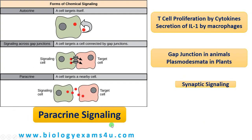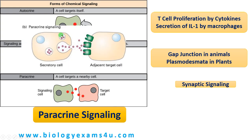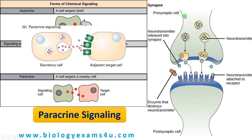The third type of signaling is called paracrine signaling. Para means nearby. Here a cell targets a nearby cell — a secretory cell releases ligands that have receptors on the nearby target cell, causing a response in that nearby target cell. The classical example is synaptic signaling. During nerve impulse transmission, neurotransmitters are released from the presynaptic cell as a result of an electrical impulse. This neurotransmitter has a receptor on the postsynaptic cell, and binding causes a cellular response such as opening of ion channels or changing of membrane potential.